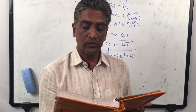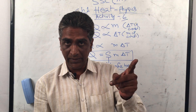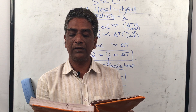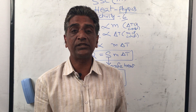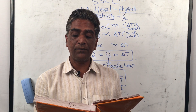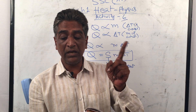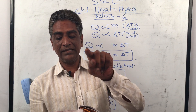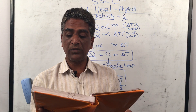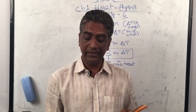The CGS unit of specific heat is calories per gram per degree centigrade. The SI unit is joules per kg per kelvin. One calorie per gram per degree centigrade equals one kilocalorie per kg per kelvin, which equals 4.186 × 10³ joules per kg per kelvin.